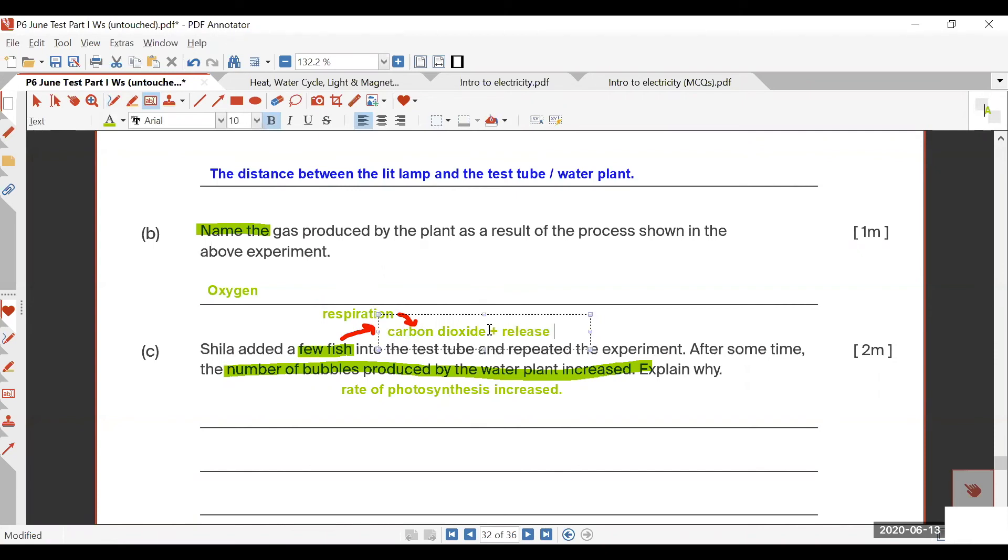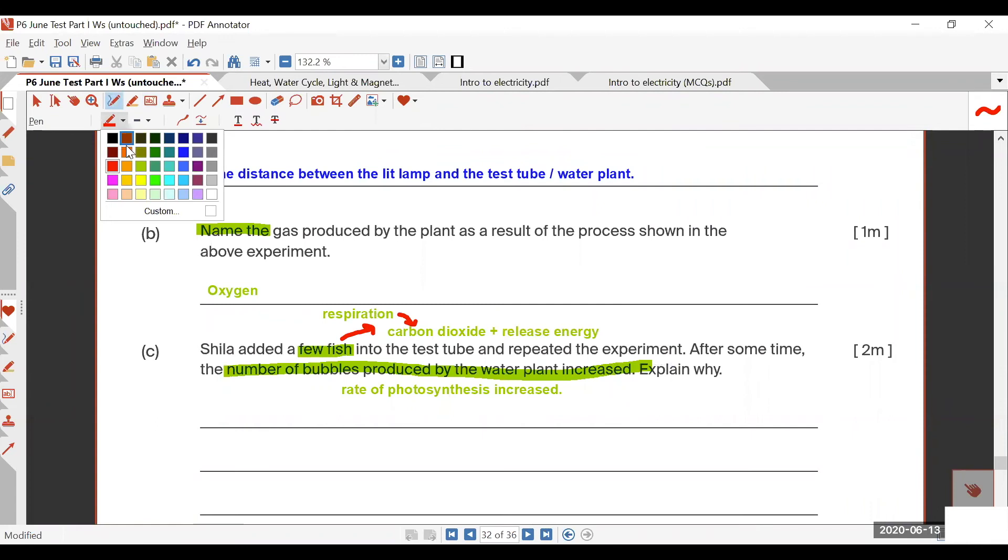But release energy is for the fish itself, it doesn't benefit the plant. Because they ask you, how does the water plant get affected? That is the one you're looking at. The water plant is the one that you want to increase the rate of photosynthesis, which you need more carbon dioxide. So you introduce fish, you have introduced more carbon dioxide in the process of respiration for the fish. Then you can talk to me about your photosynthesis.